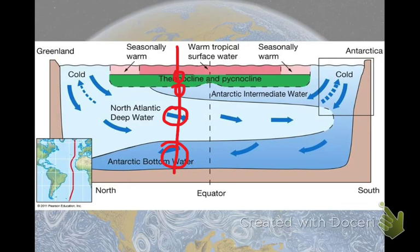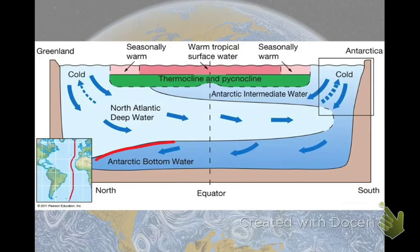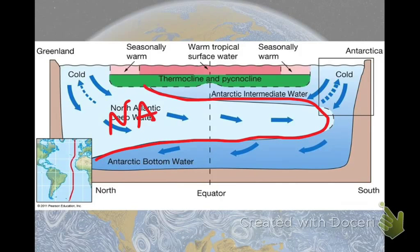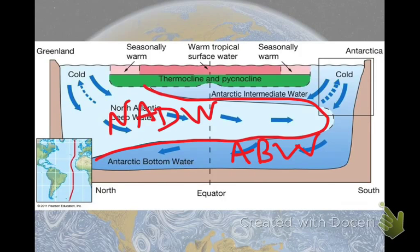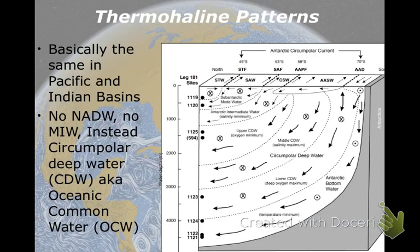This cross-section is probably important to know and to be able to draw. At least be able to label it if I gave you the outlines — I would expect you to label NADW, AABW, and maybe put in arrows showing which direction they flow.